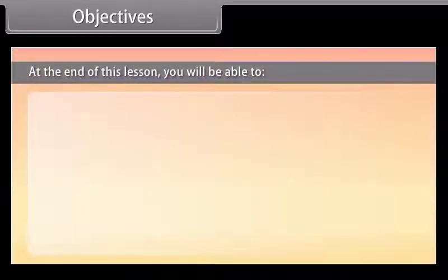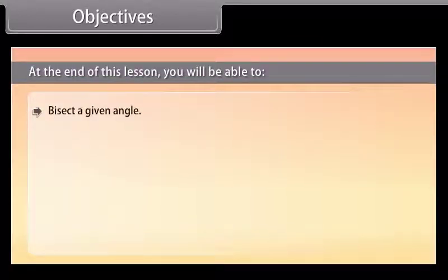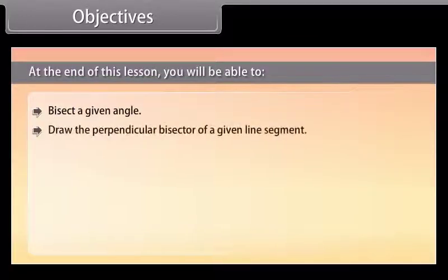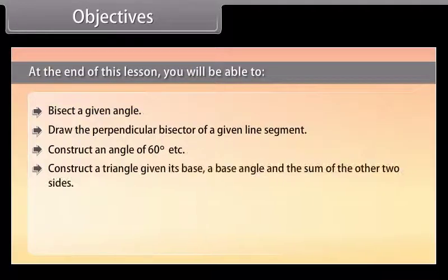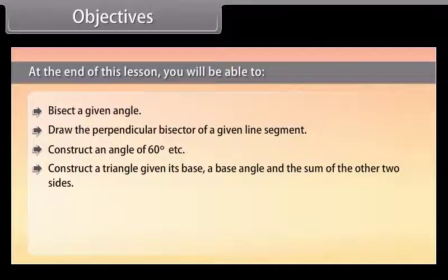At the end of this lesson, you'll be able to: bisect a given angle; draw the perpendicular bisector of a given line segment; construct an angle of 60 degrees; and construct a triangle given its base, a base angle and the sum of the two other sides.